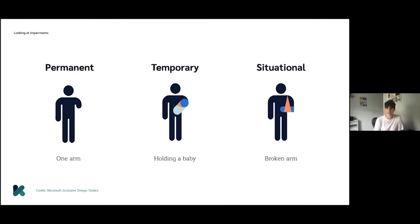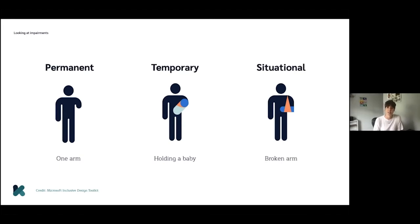To simplify things, we can understand impairments from three different perspectives: permanent, temporary and situational. In this example, we can see how similar functionality can be impaired by different circumstances. You may not consider yourself as someone with a disability, but this illustration demonstrates how we can all be impaired at times.